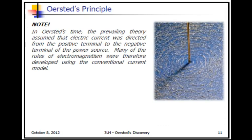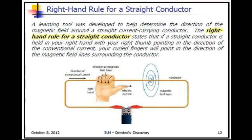In Orsted's time, the prevailing theory assumed that the electric current was directed from the positive to the negative terminal. So we made these rules of electromagnetism using that conventional current flow. That is why it is important to know both the conventional current flow and the electron flow, and we will see how we use that.